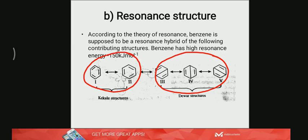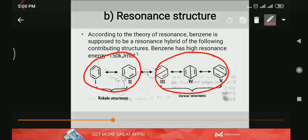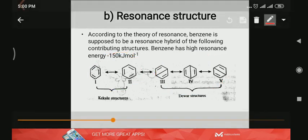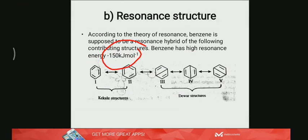Because the stability and energy of benzene is closer to that of Kekule structures. Due to resonance, the molecule attains stability, and the amount of stability obtained due to resonance is expressed in terms of what is called resonance energy. Benzene has a very high amount of resonance energy, that is minus 150 kilojoules per mole.